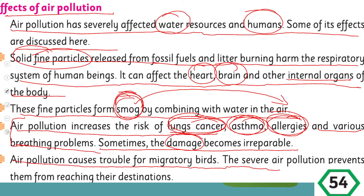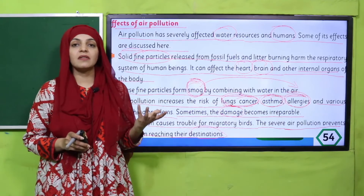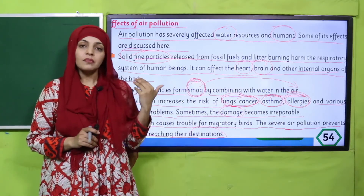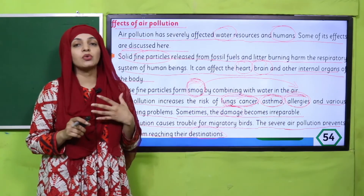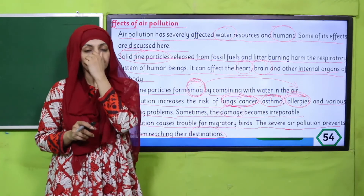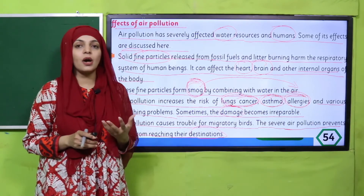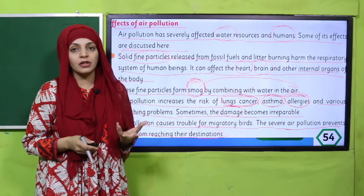Air pollution causes trouble for migratory birds. Where air pollution is present, it prevents them from reaching their destination. Migratory birds that migrate from one place to another due to seasonal changes face huge problems because of pollution. Due to pollution, their migration faces many difficulties, and ultimately, when they cannot reach their desired destination, they face threats to their lives.